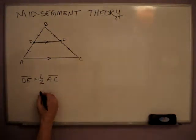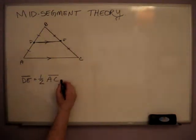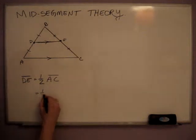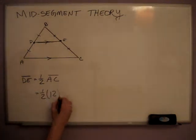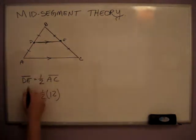So, for instance, if I tell you that line segment AC equals 12, you just multiply those together, line segment DE would be 6.